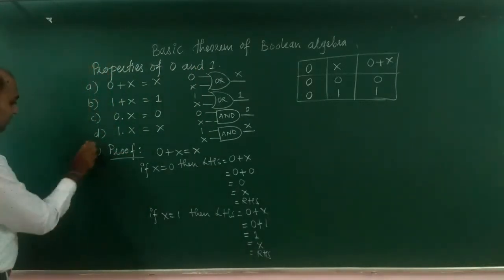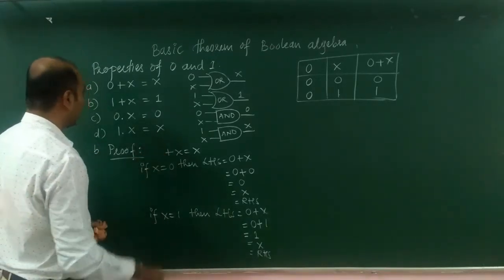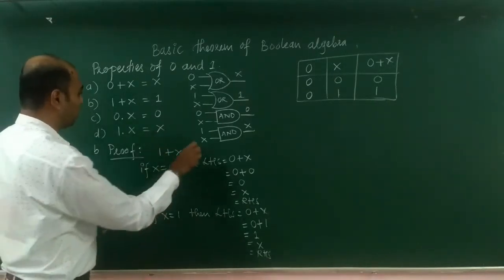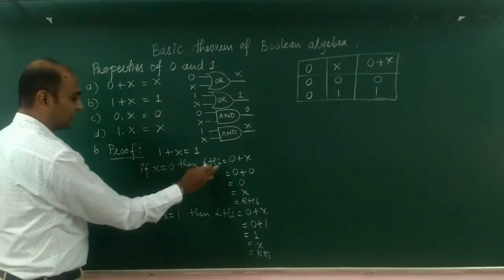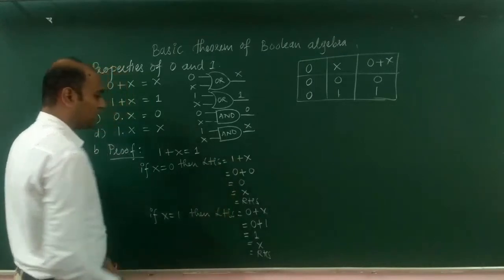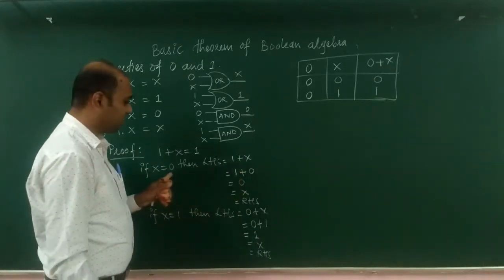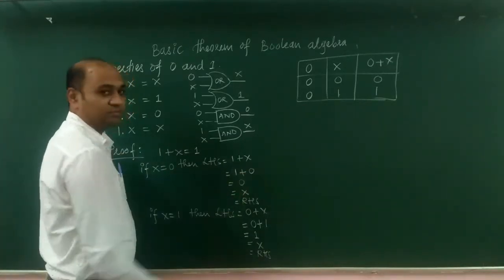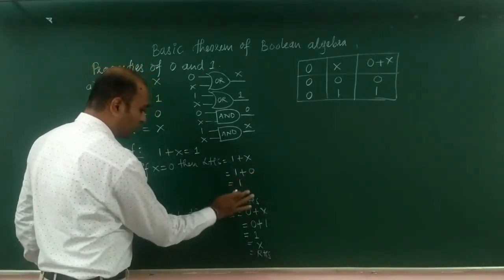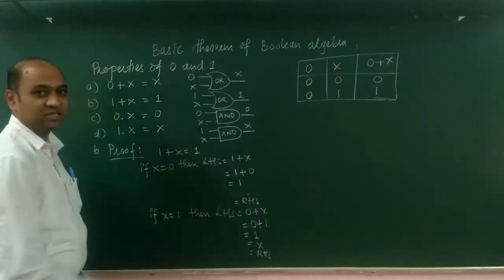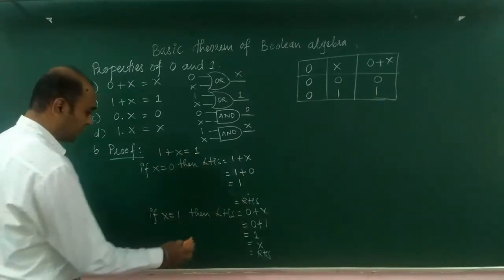Now let us move on to property B: 1 OR x equals 1. If x equals 0, then LHS is 1 OR x. Substituting x as 0 gives 1 OR 0, which is 1. 1 is RHS because we have 1 OR x equals 1. Hence the proof.